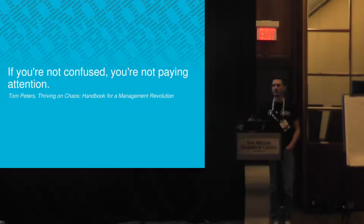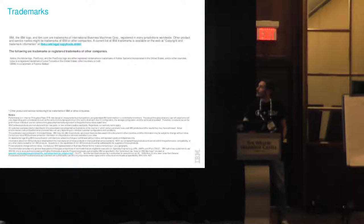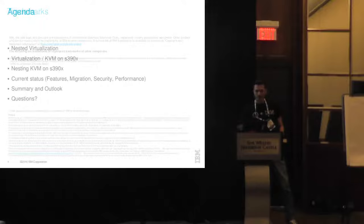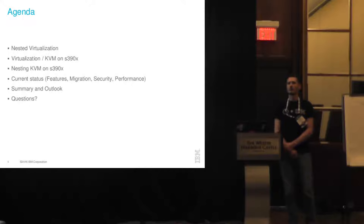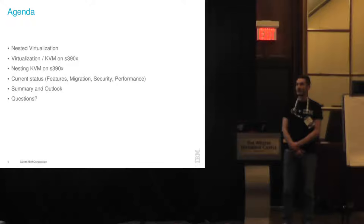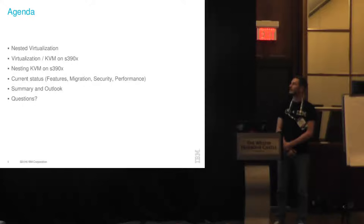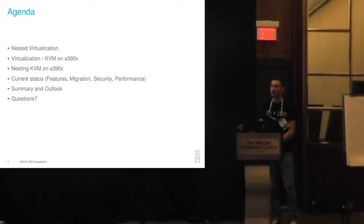I'm going to go briefly over the basic concept of nested virtualization, then quickly move on to what virtualization looks like on IBM Z systems. Then we'll go into the real details of how we made it run on IBM Z systems. After having you completely confused, we'll look at the current status, some interesting performance numbers, a short discussion about security, and finally a summary and outlook.